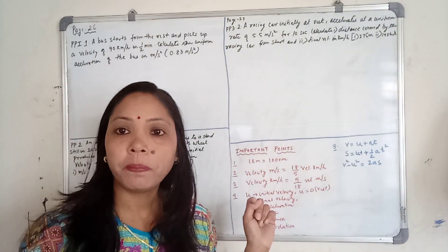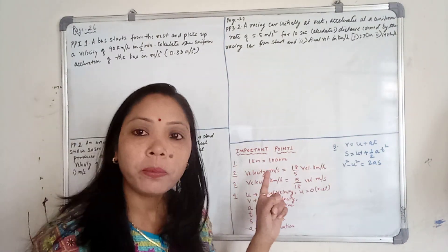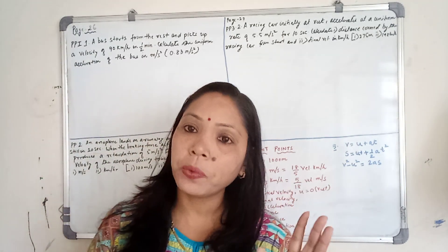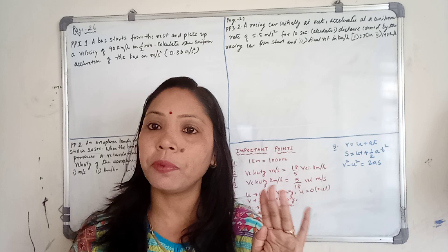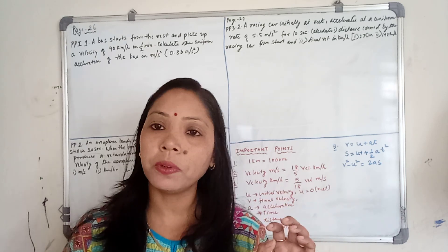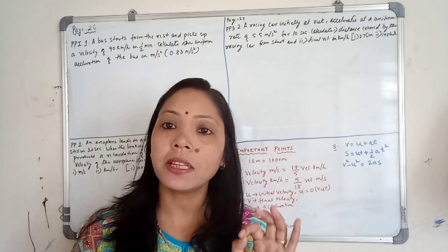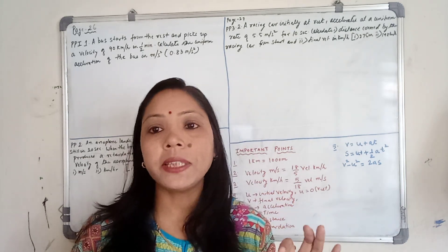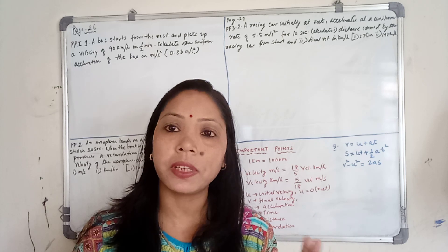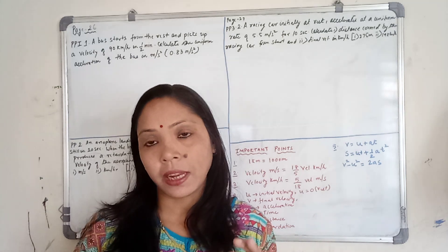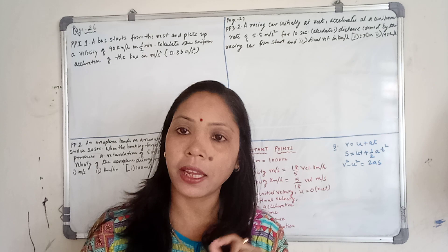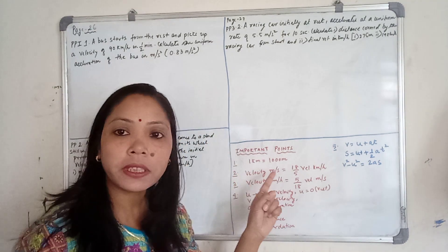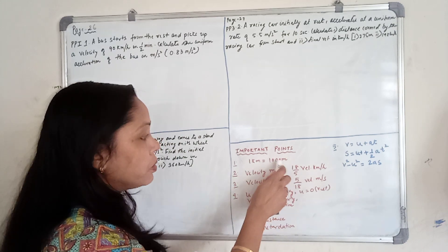The first important point is: 1 kilometer is equal to 1000 meters. Whenever we are doing a numerical, first of all we have to convert all the units into SI — the international system of units. If a value is in kilometers, we have to convert it into meters, making all terms the same unit. So, 1 kilometer equals 1000 meters.